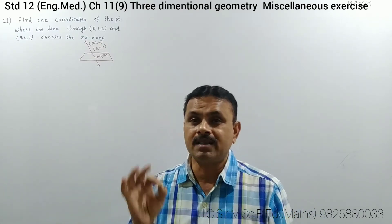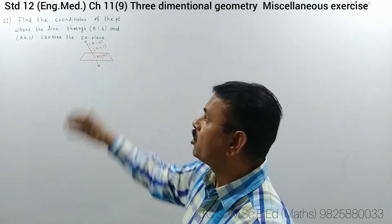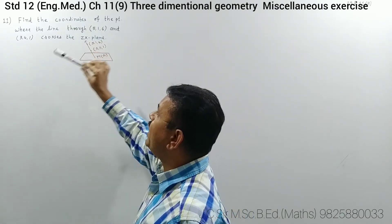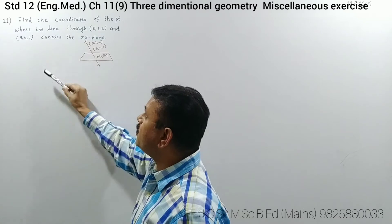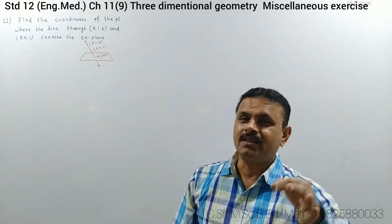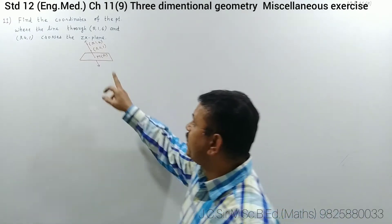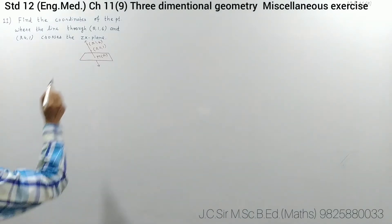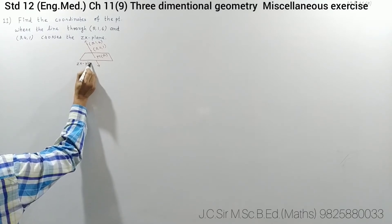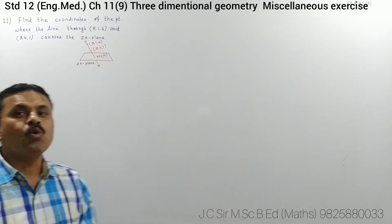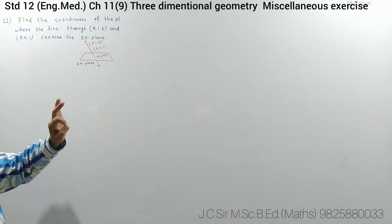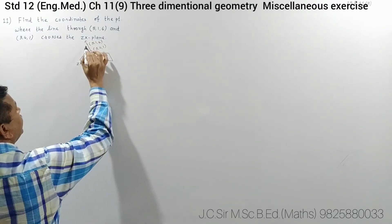The 11th sum is exactly like the 10th sum. The question is: find the coordinates of the point where the line through (5,-1,6) and (3,-1,4) crosses the ZX plane. On the ZX plane, the y-coordinate is 0. First of all, find the direction of this line.